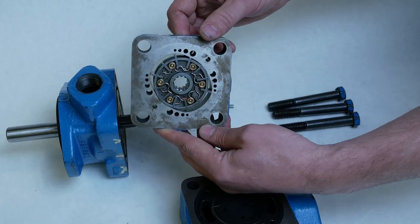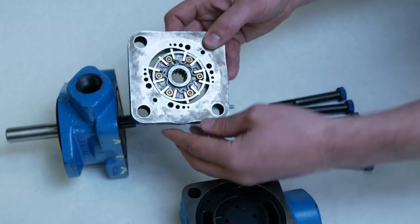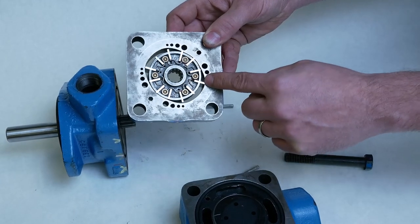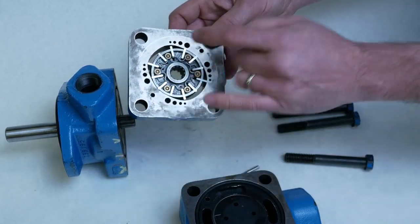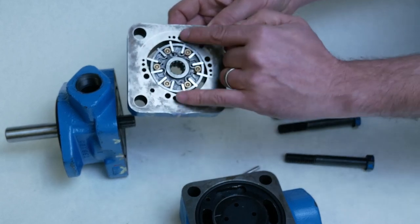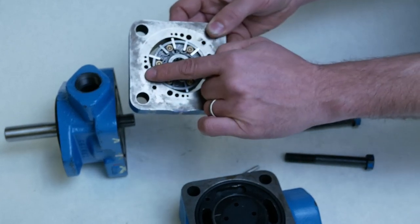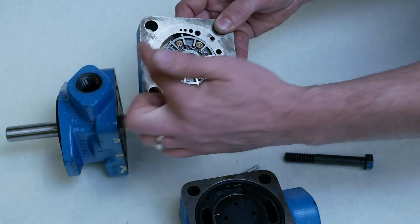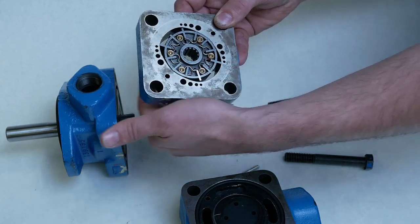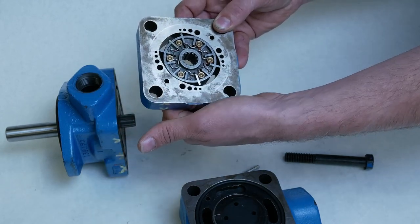We can see that this is a fixed displacement motor. It has an elliptical center housing. And so we have four transfer slots right here. And those four slots are allowed to make sure the oil on either side of the center housing has equal pressure and we don't create any cavitation.